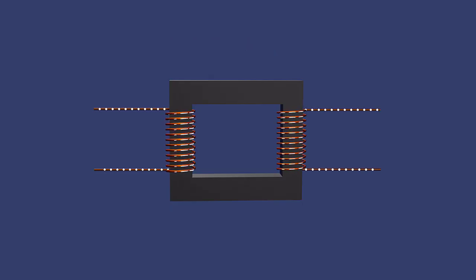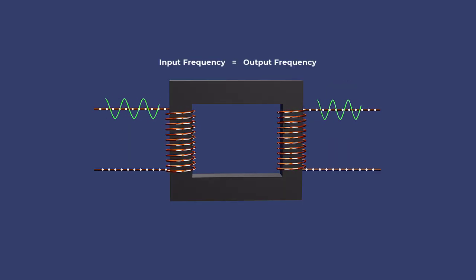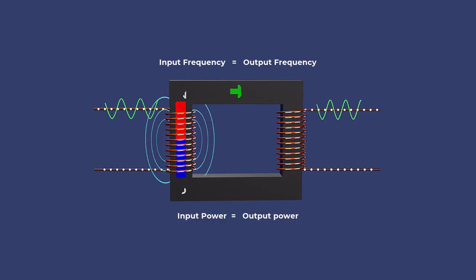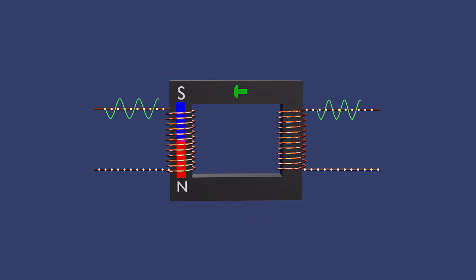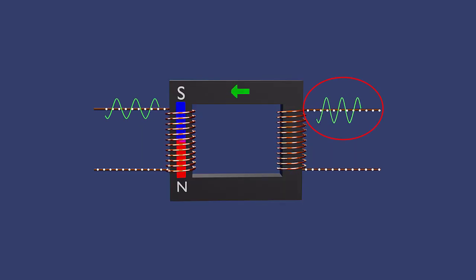Electrical transformer is a static device that steps up or steps down the voltage level without changing the frequency or amount of power being transferred through a magnetic field. It doesn't generate new energy but modifies the voltage and current levels to suit various applications.